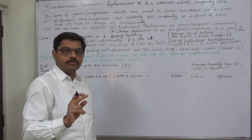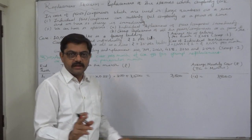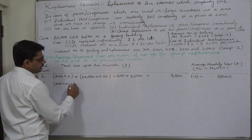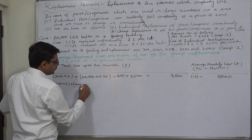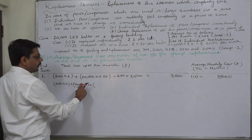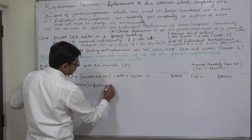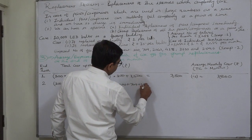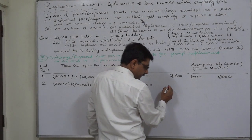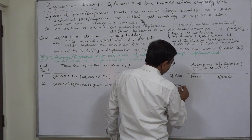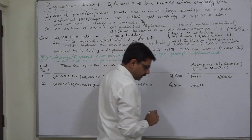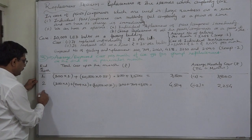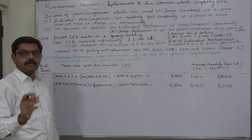If we prefer group replacement of all 10,000 bulbs at the end of the second month, in the first month we replace 300 individually, and in the second month we replace 709 individually. At the end of the second month, we replace all 10,000. So total is 300 plus 709 plus 3500, which is 4509. Divided by two months, the average monthly cost is rupees 2254.5.